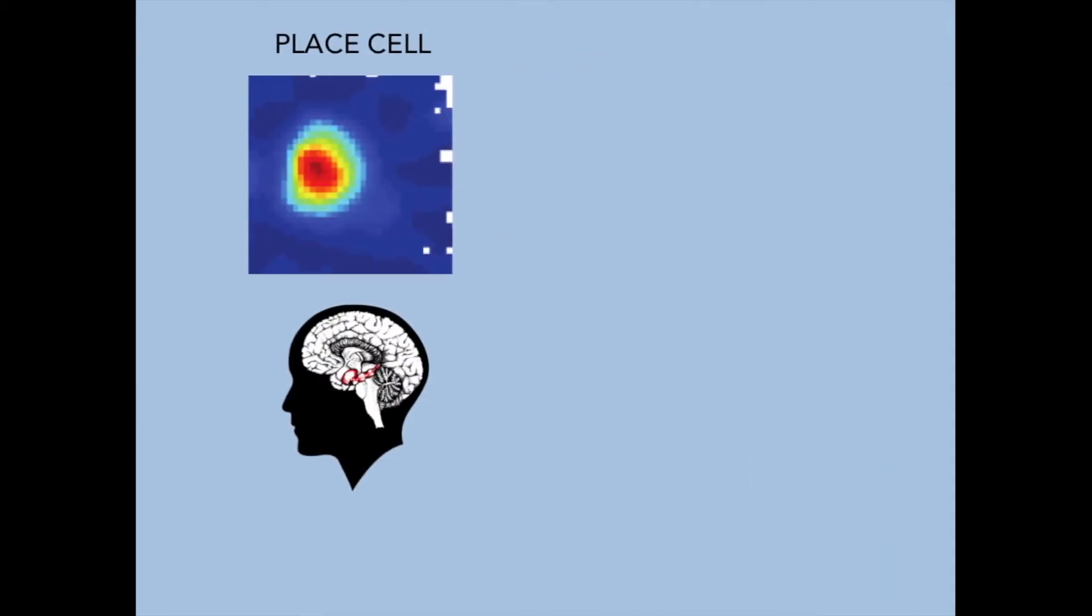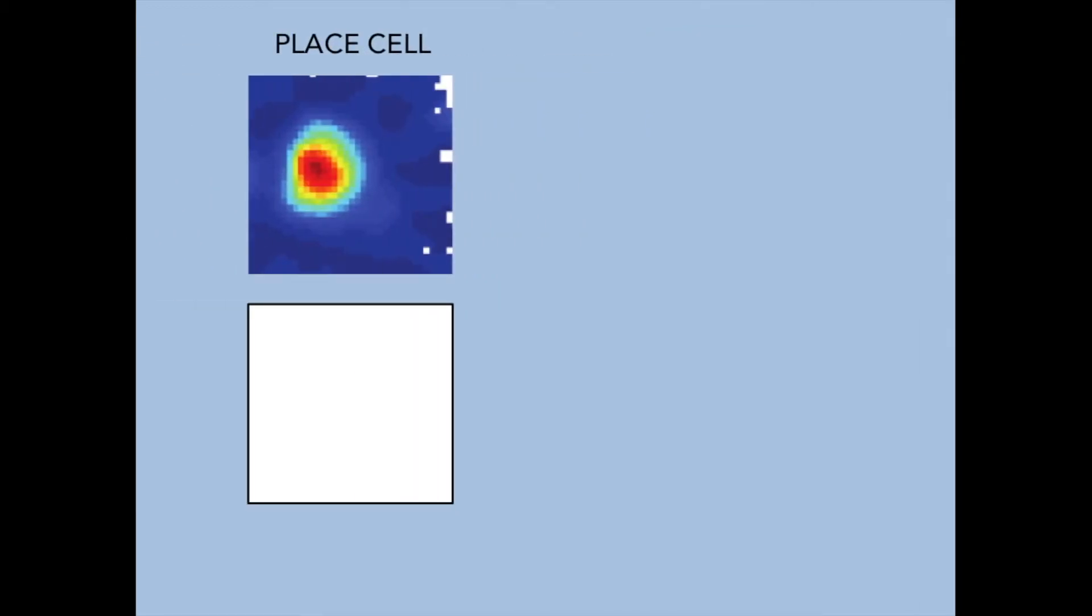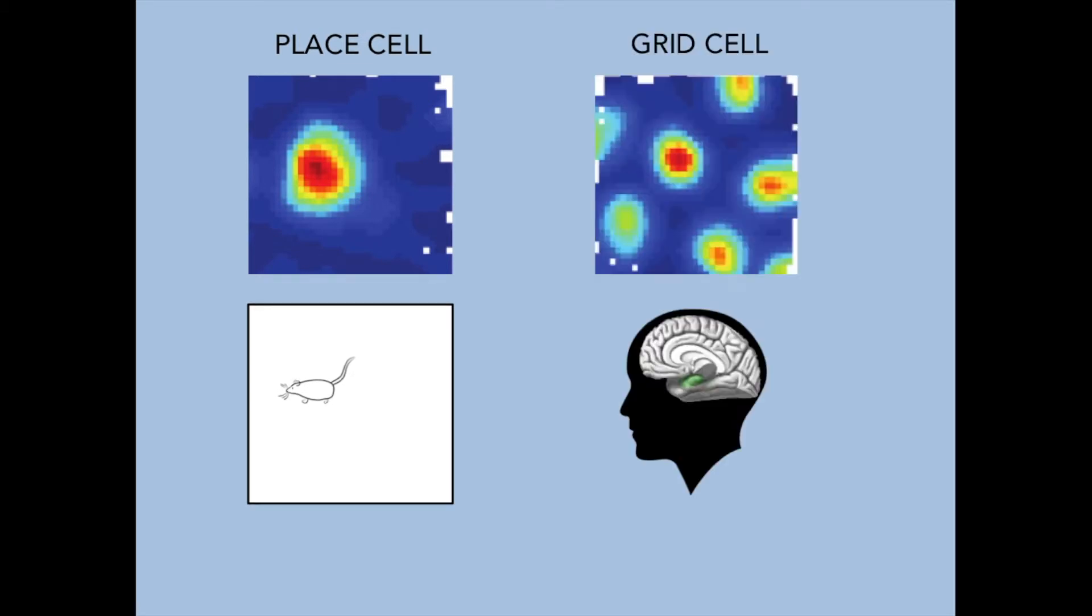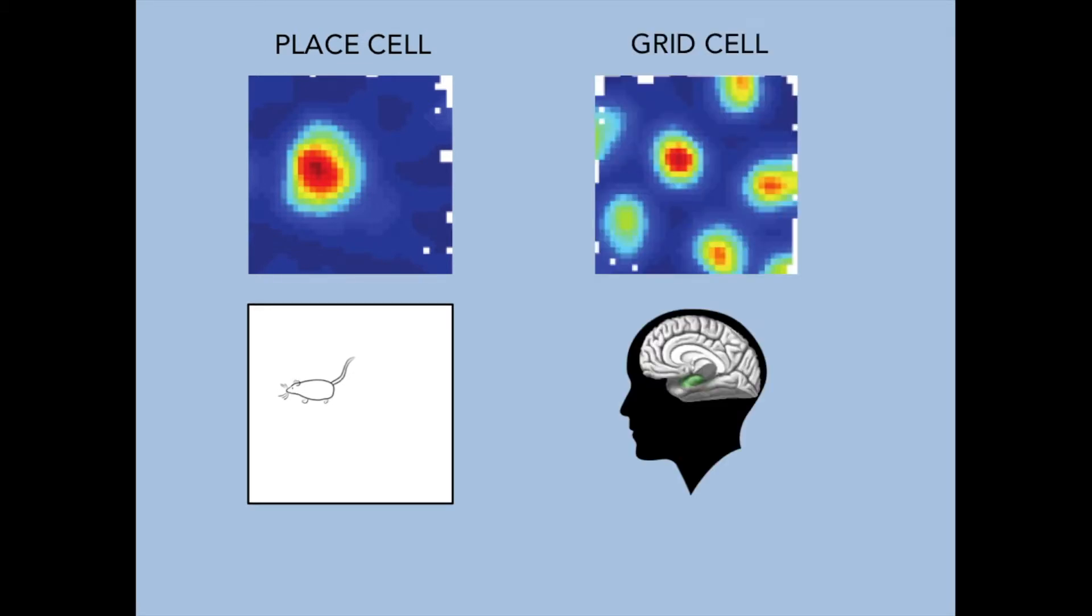Place cells are found in the hippocampus. They are only active when the animal is in one specific location in space. Grid cells are found in the cortex surrounding the hippocampus. They fire at multiple locations in space and this forms a neat pattern telling the animal how far it's travelled.